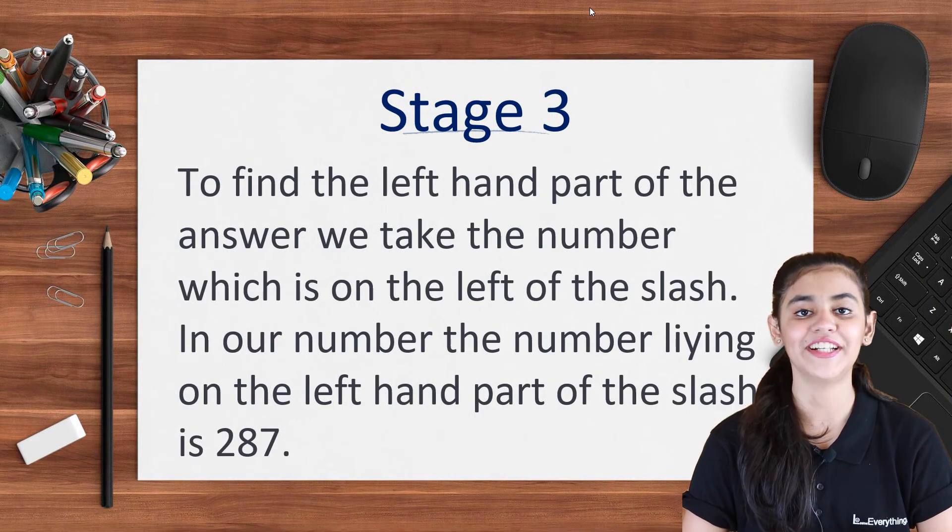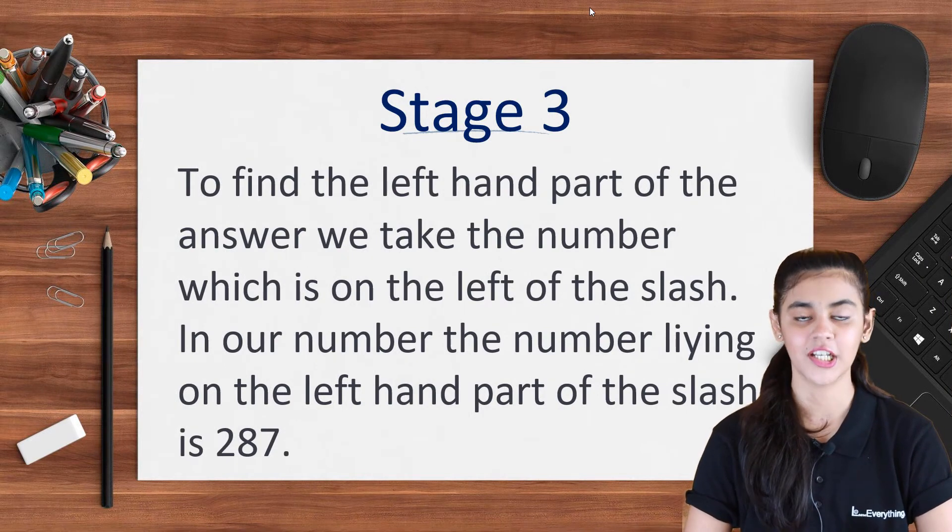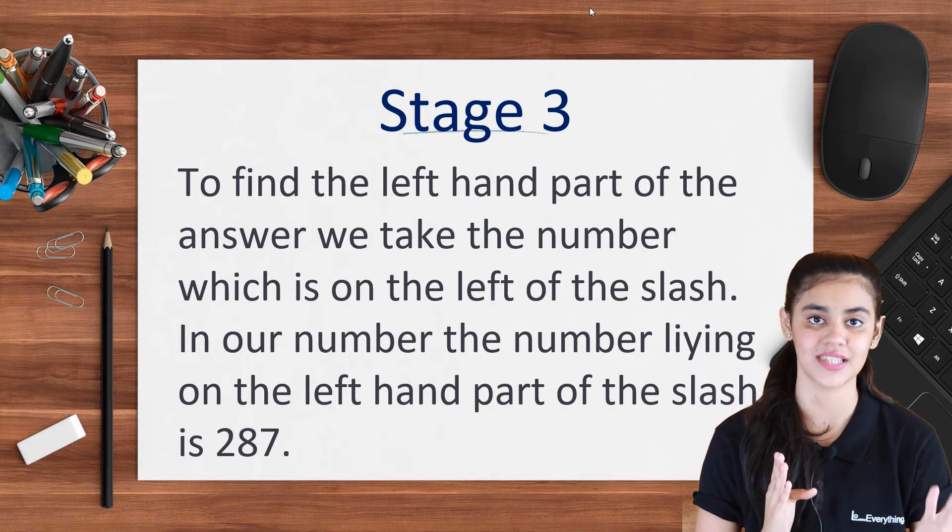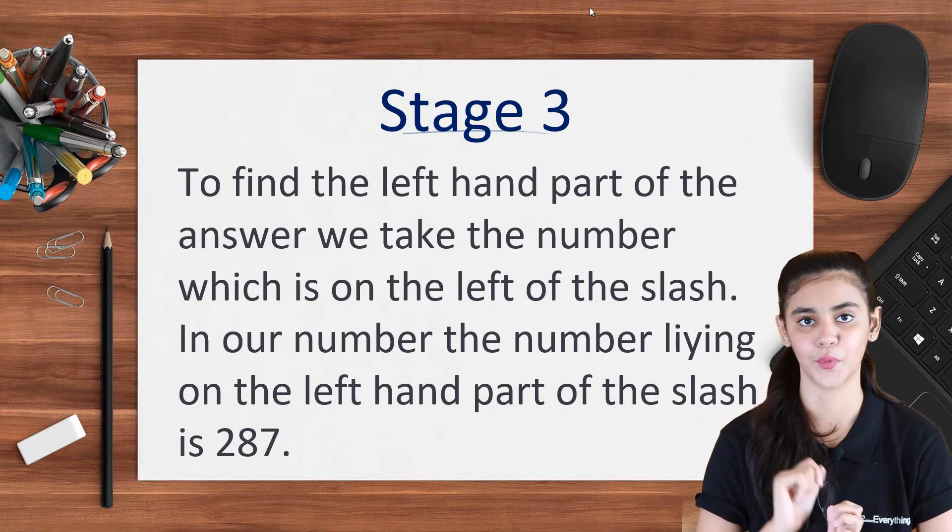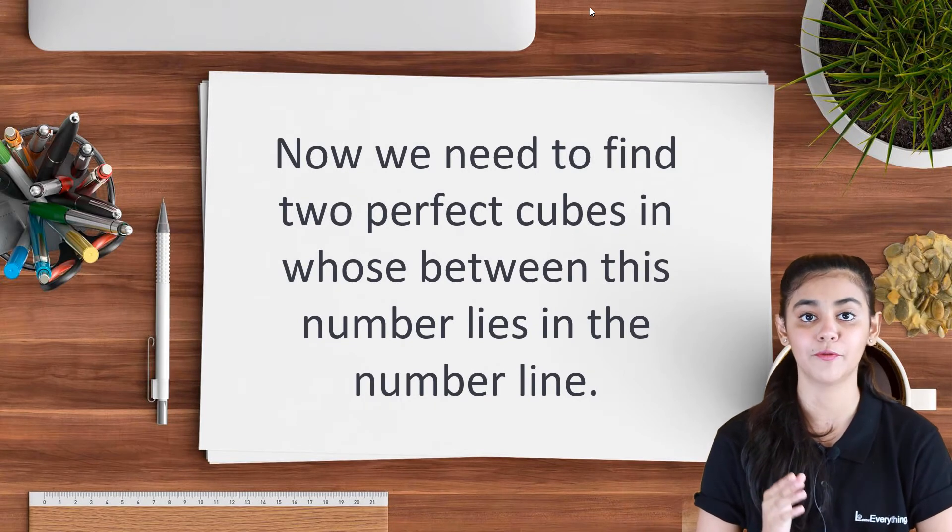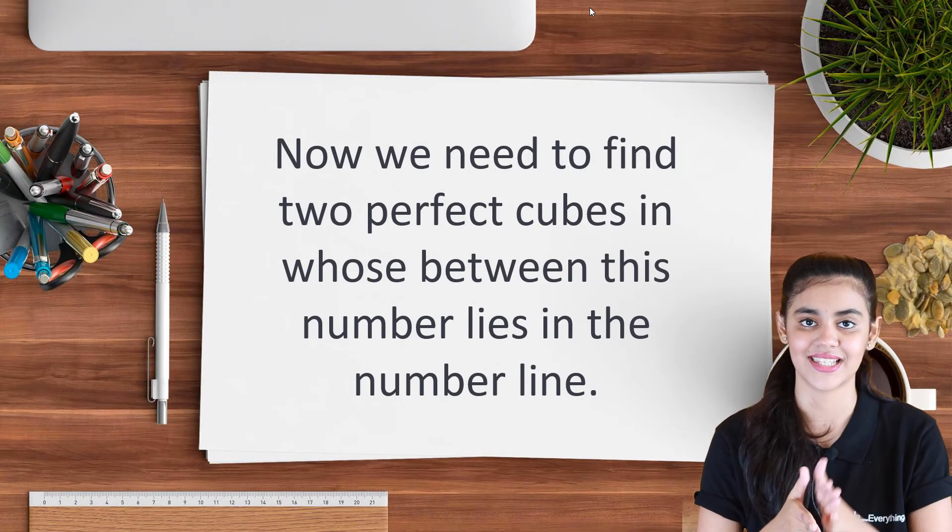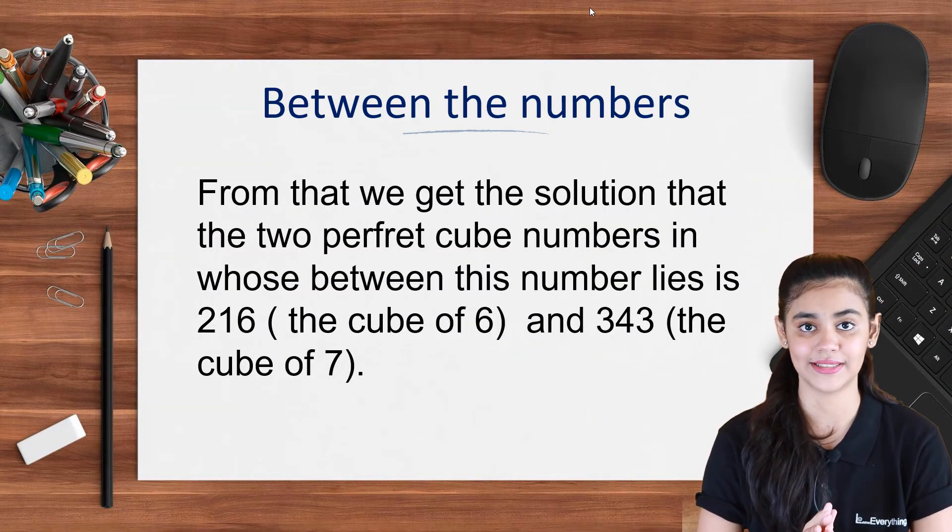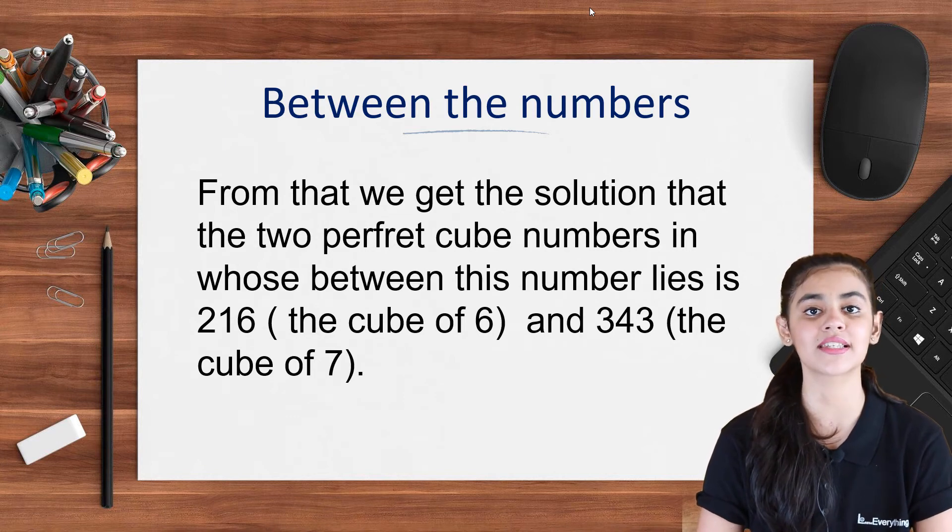Now to find the left hand part of the answer. We know that on the left hand part before the slash the numbers are 287. Now we need to find two perfect cubes in which 287 lies in between. So the two perfect cubes in which 287 lies between is 216 that is the cube of 6 and 343 that is the cube of 7.